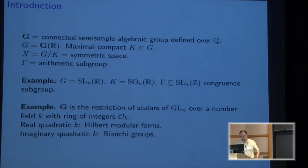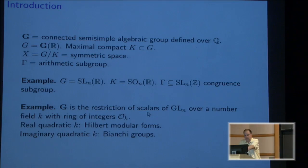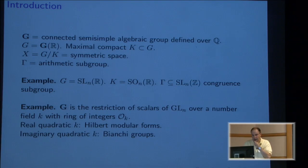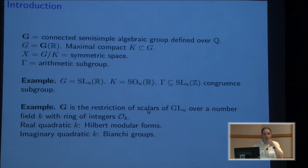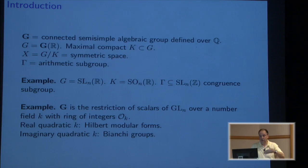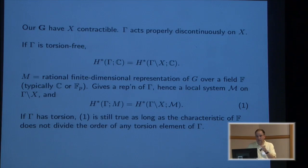A lot of what I say today will work where G is the restriction of scalars for GL(N) for any number field K, ring of integers O_K. I just said semi-simple and GL is reductive. What that means is in the symmetric space for these GL(N) cases, there's, in general, going to be extra factors coming from the units of O_K. For real quadratic K, you've got the world of Hilbert modular forms. For imaginary quadratic fields, you've got the world of the Bianchi groups and so on.